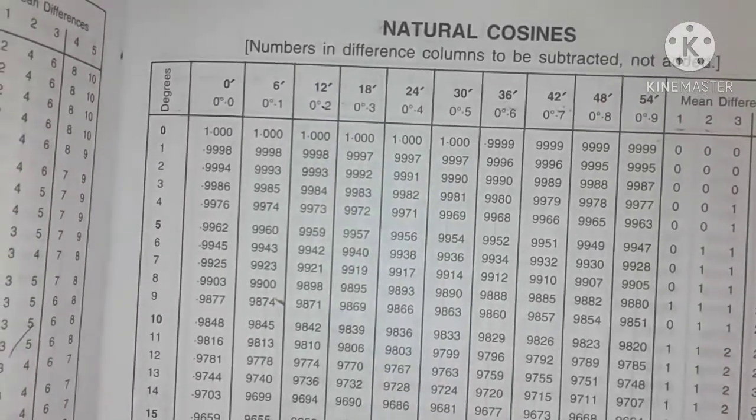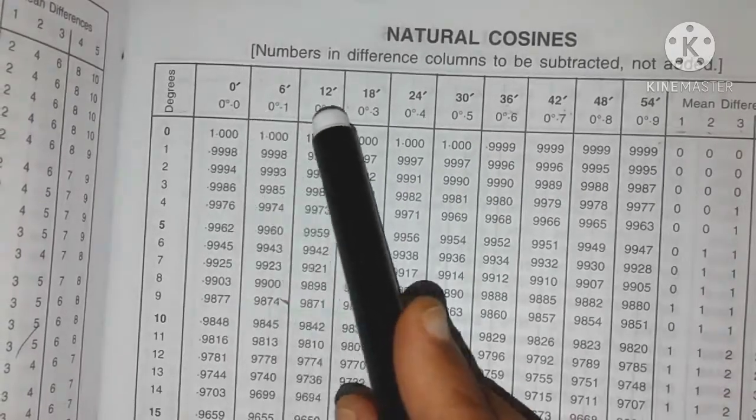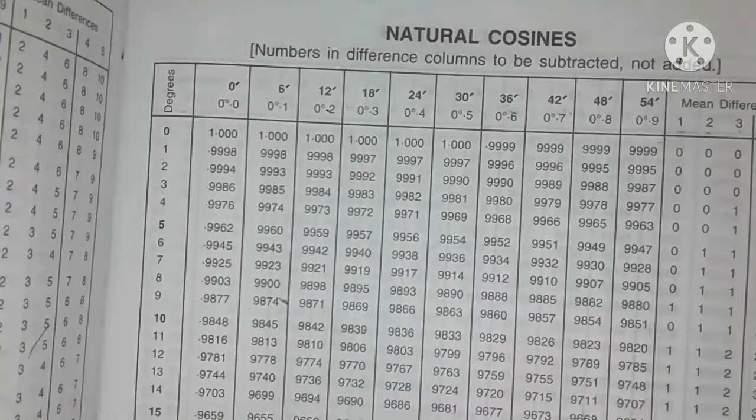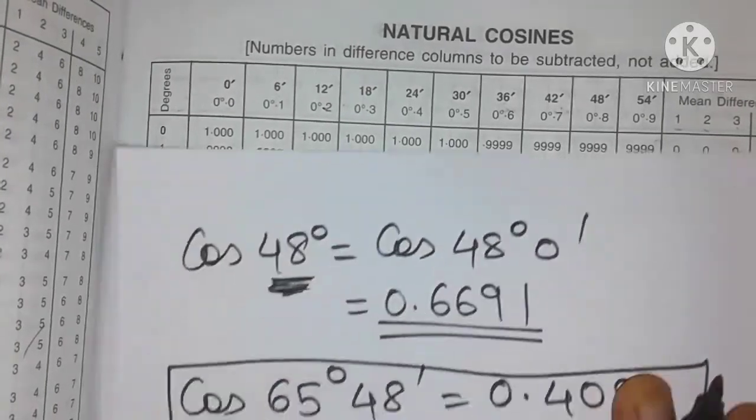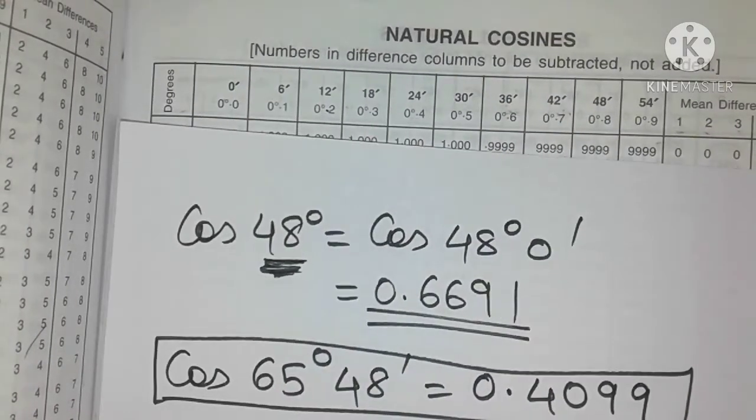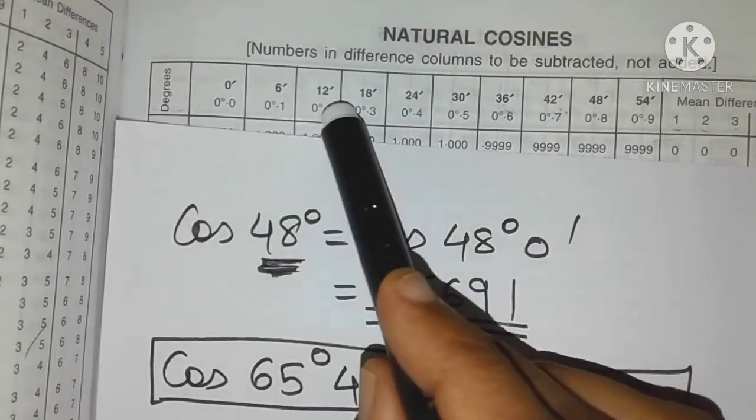Now here I have 0, 6 minutes and 12. So there is no 10 minutes. So what do we do in this case? We have to follow a slightly different approach. So what we do is now 10 minutes comes between 6 and 12.